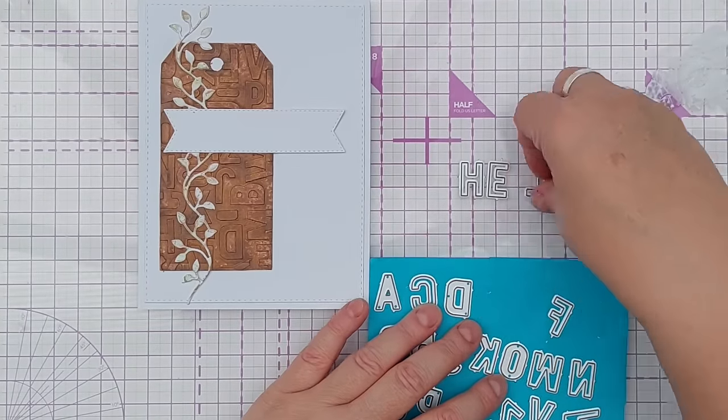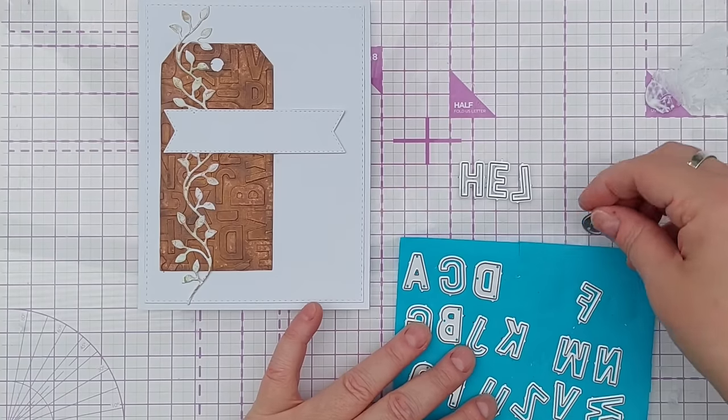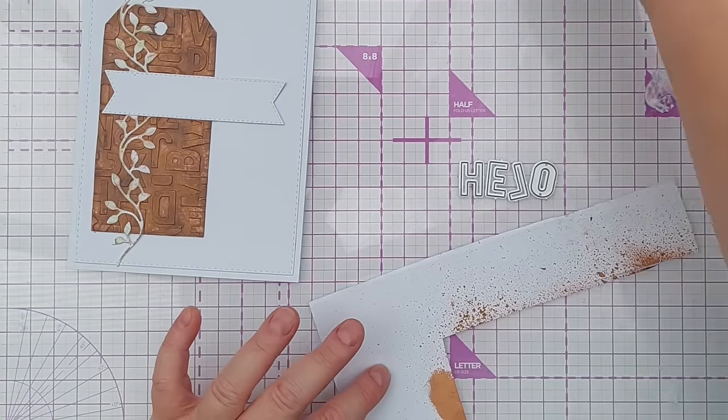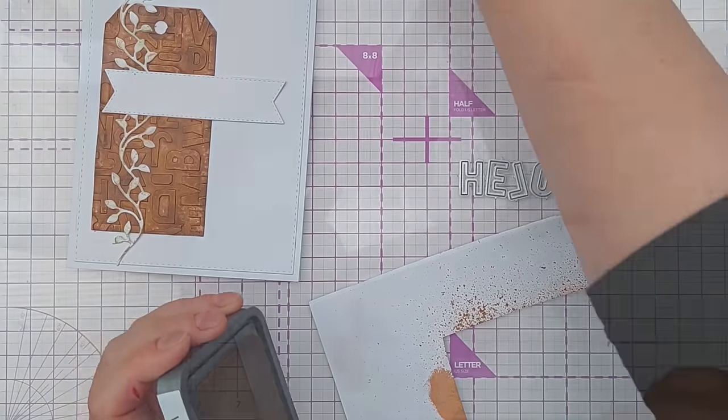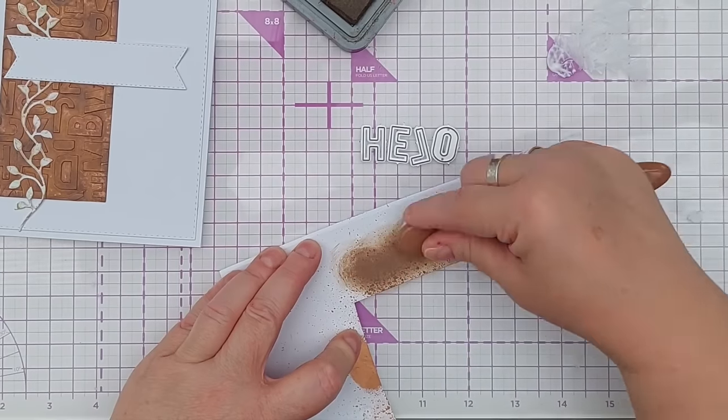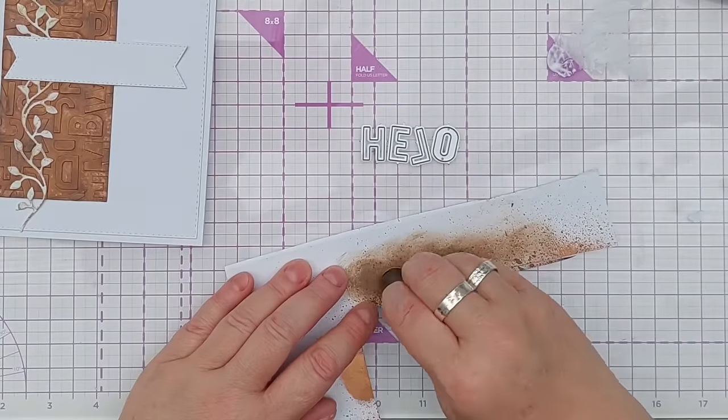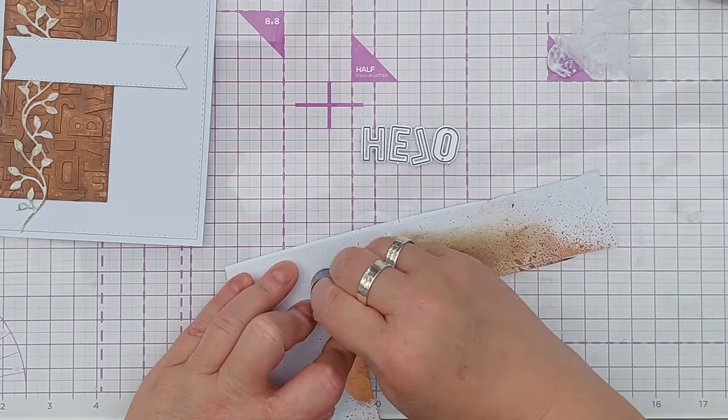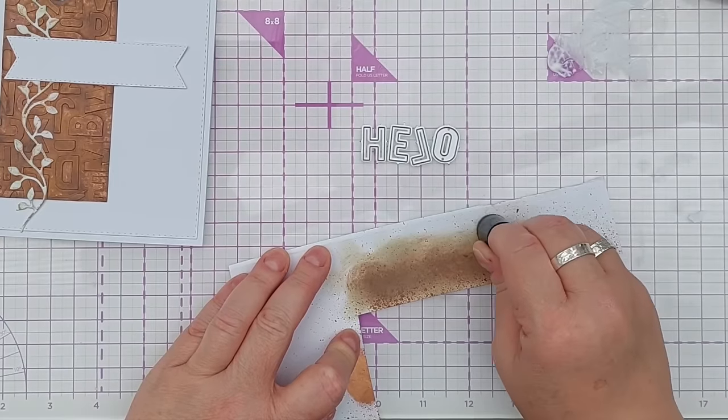And I'm going to take this bit left over and I think some Walnut Stain just to make it a bit darker and help it pop. Maybe a few spots of Bundled Sage. I don't know if that will show up when I finally die cut but it'll do.